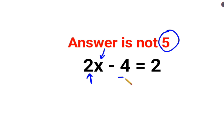So first operation should be adding 4 on both sides. So you have 2x equals to 2 plus 4 is 6.